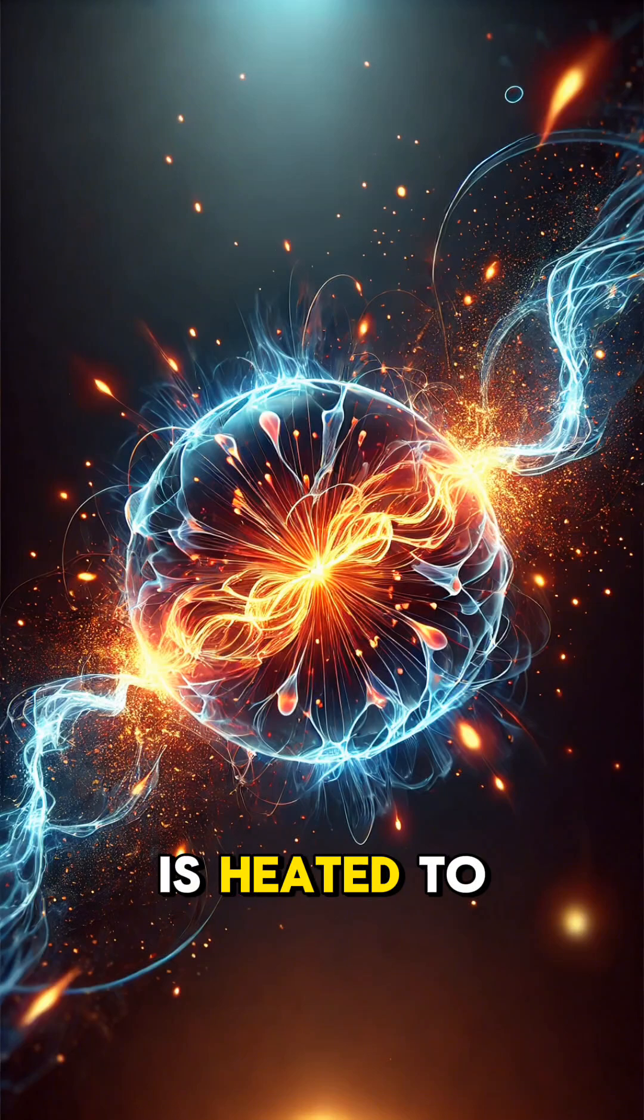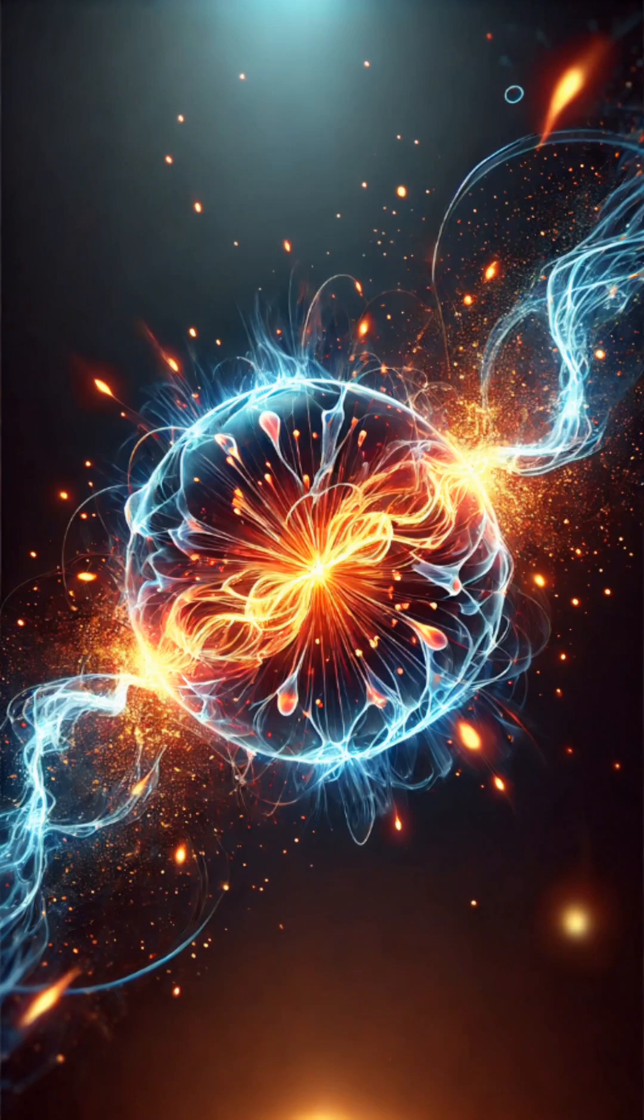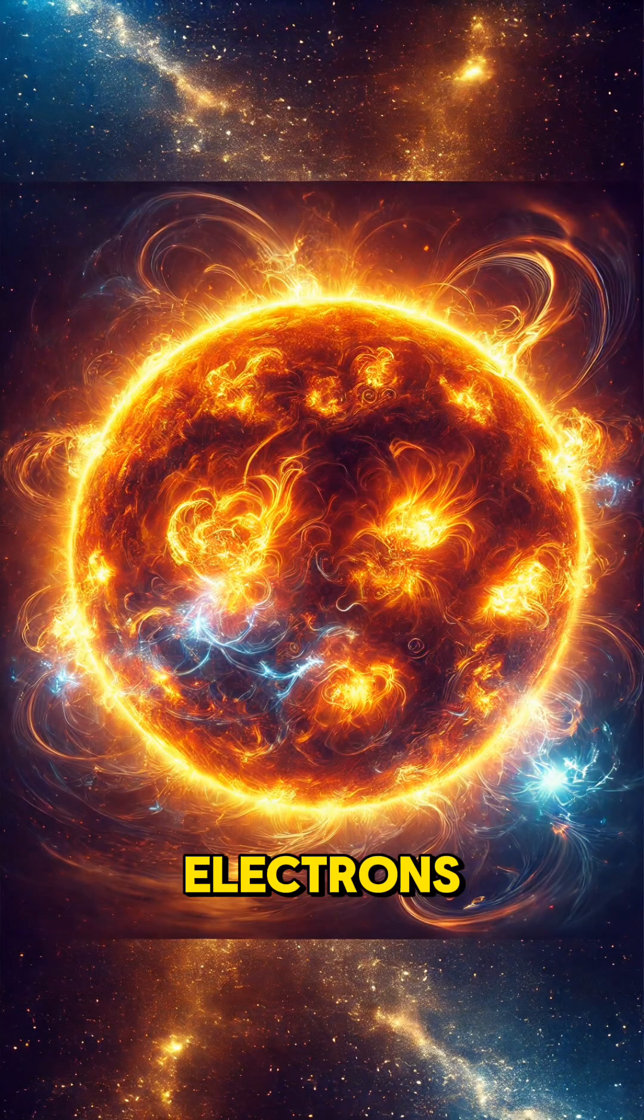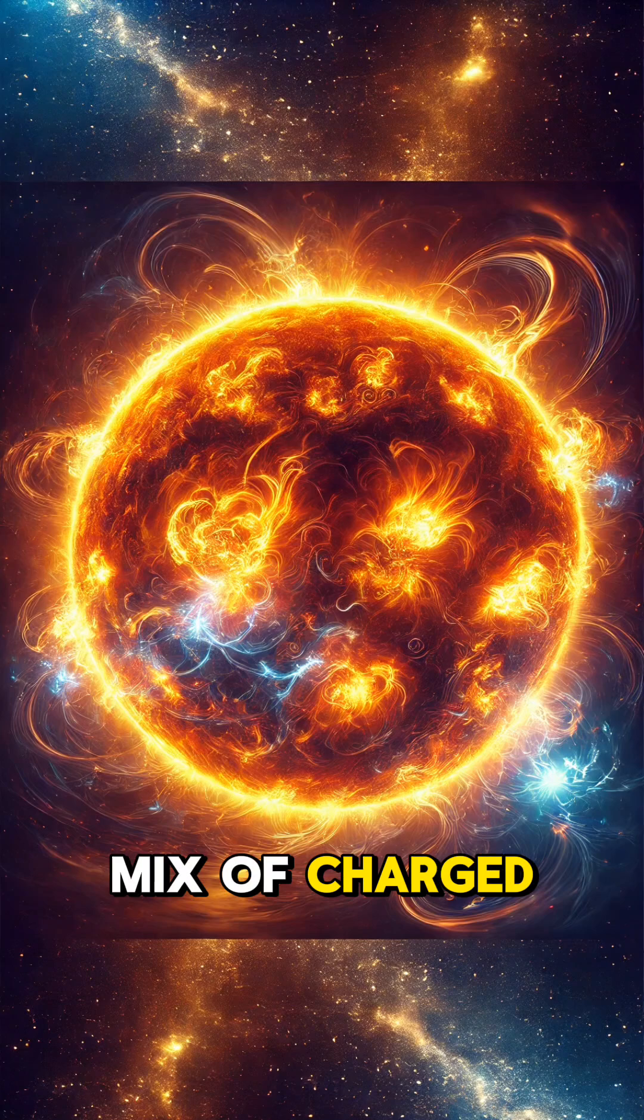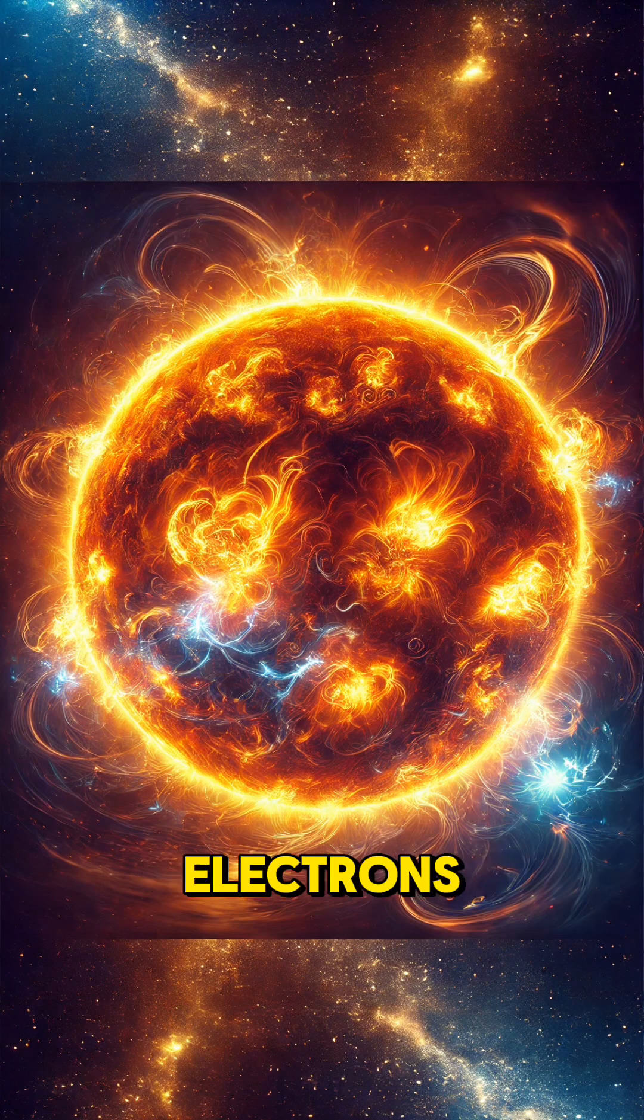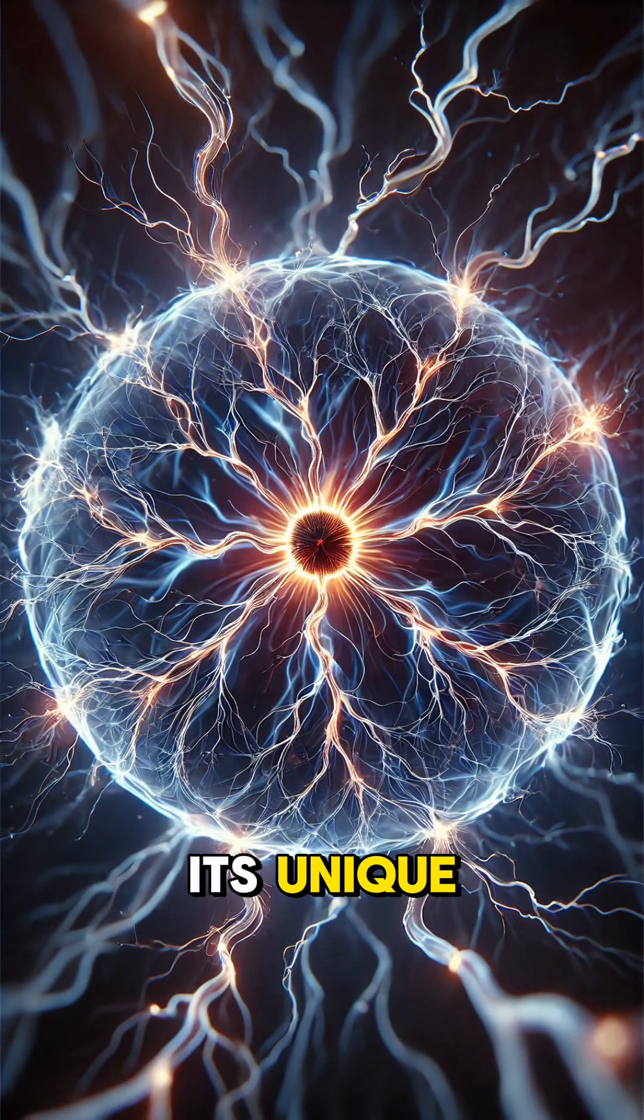Plasma forms when a gas is heated to extremely high temperatures, causing the atoms to lose their electrons. This creates a mix of charged particles, positively charged ions, and free electrons, giving plasma its unique properties.